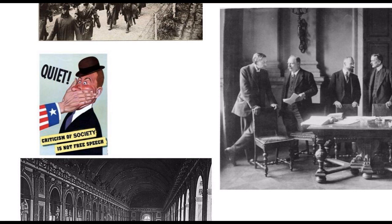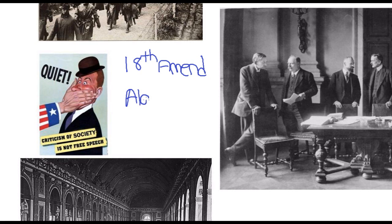Probably one of the most important progressive reforms was the decision that Congress passed in December of 1917 — the 18th Amendment — which banned the production, distribution, and sale of alcohol, eventually bringing about 1920s Prohibition.